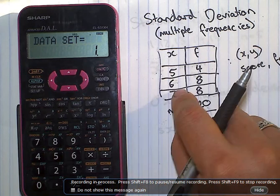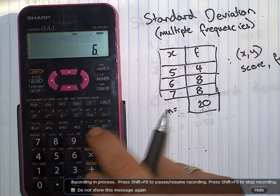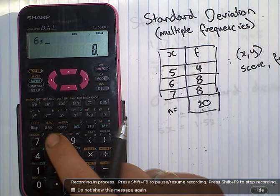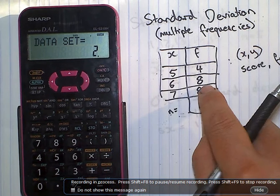Second one. Six occurs eight times. Enter. Two sets of data, two sets of data entered.